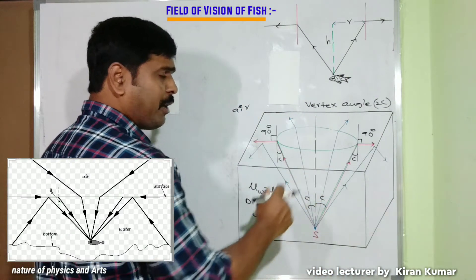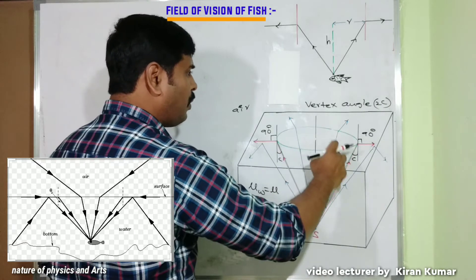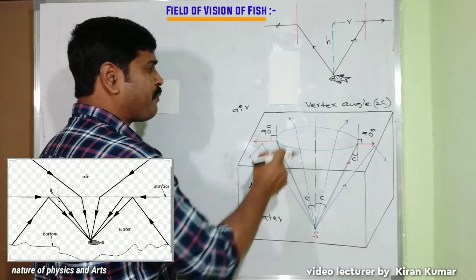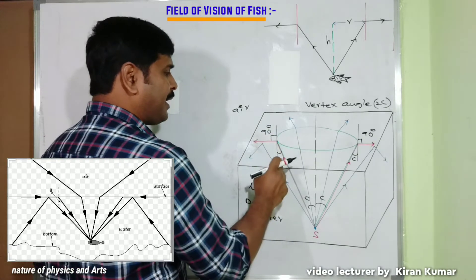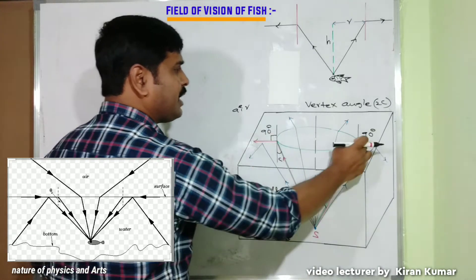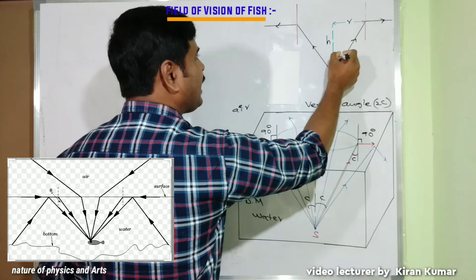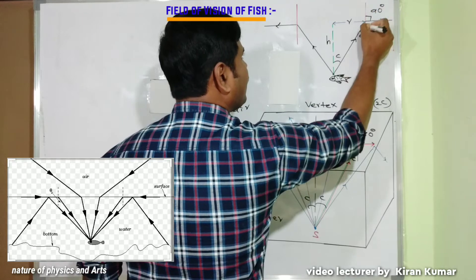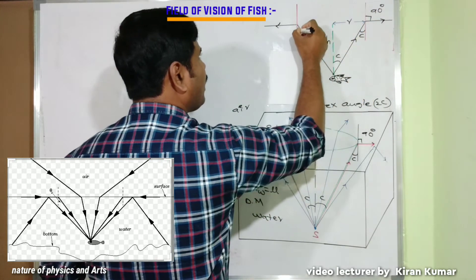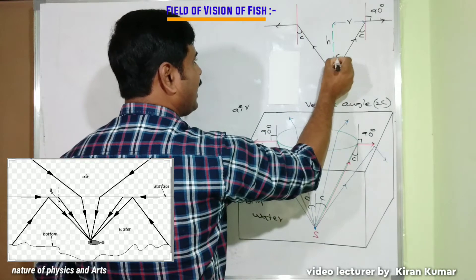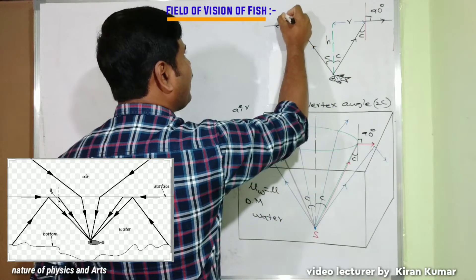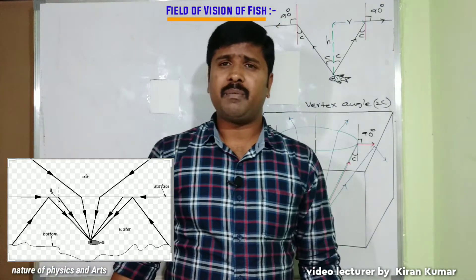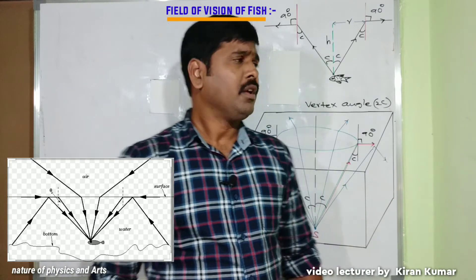Here we will apply critical angle and total internal reflection when light travels from water to air. This is shown in a three-dimensional diagram with a cone. Light traveling from denser to rarer medium bends away from the normal. At the critical angle C, the angle of refraction is 90 degrees — this is the surface between air and water.